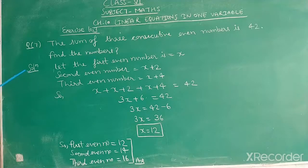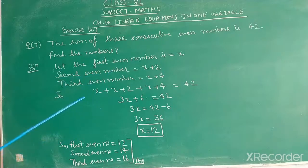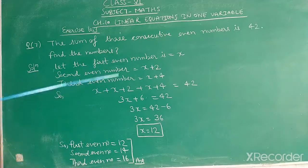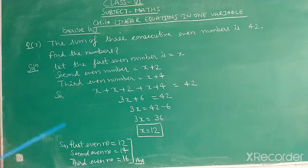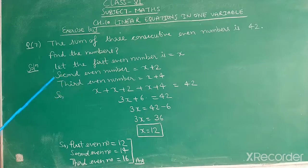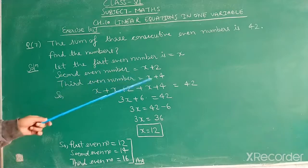First of all, we let the first even number is x. The difference between even numbers is 2. Then the consecutive second even number is x plus 2. We add 2 in the first number, then we get next even number. And the third even number is x plus 4.